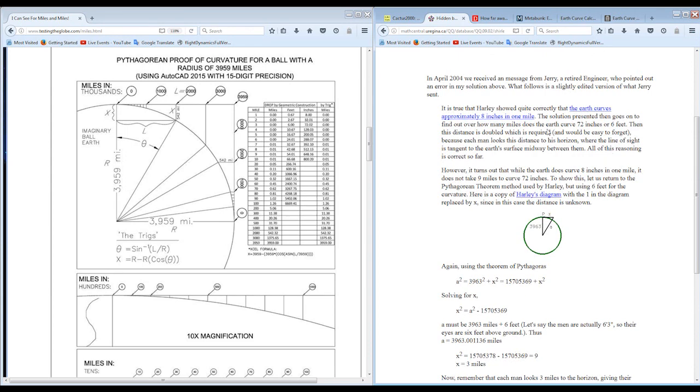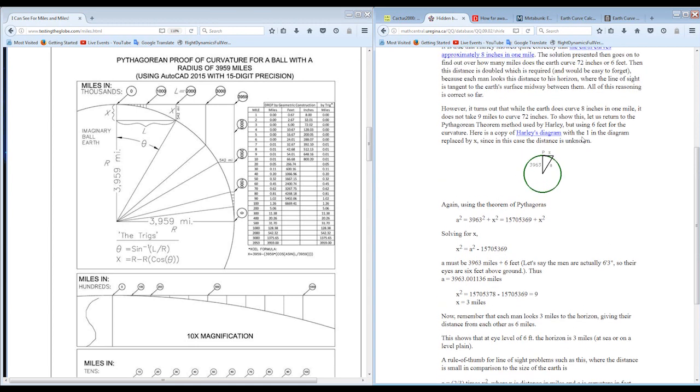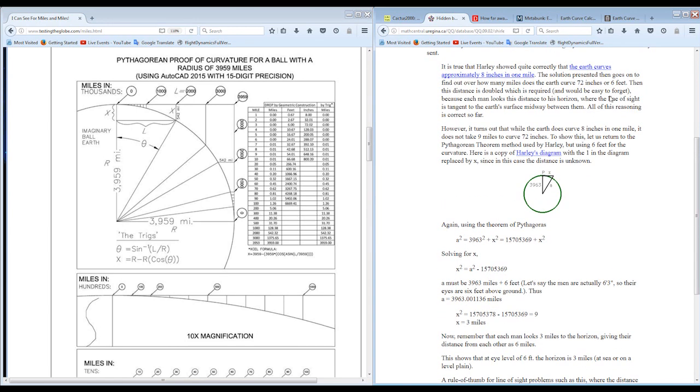He goes to explain it's 8 inches per mile. But it's not, you know, 6 feet is 72 inches, so 8 times 9 would be 72. So you might be thinking it's 9 miles. The dude would have to be 9 miles away for a 6-foot person to be obscured at 8 inches per mile. Well, no, it's not a slant, it's a curve. It's a ball.